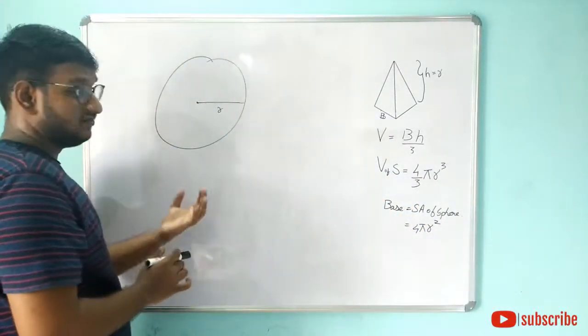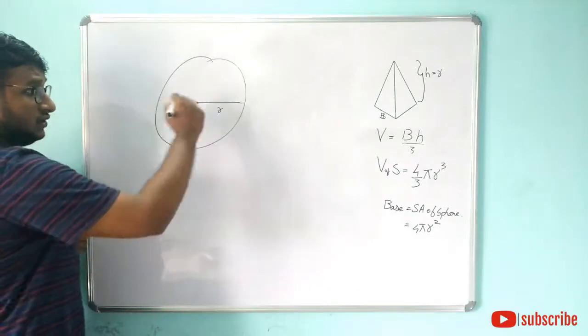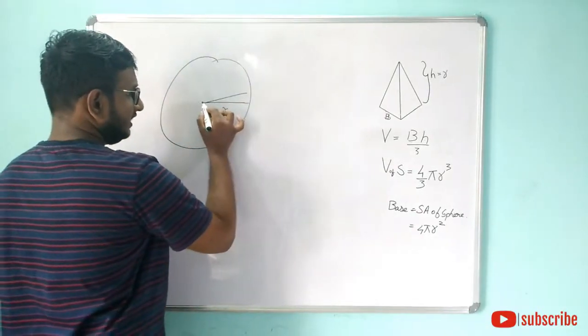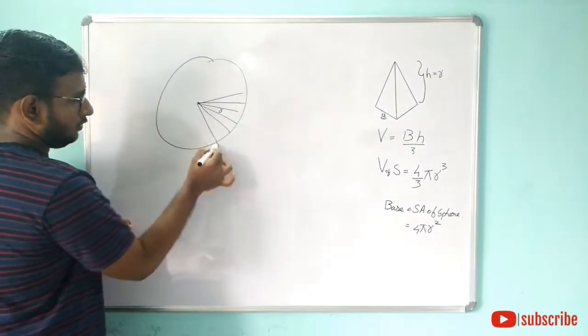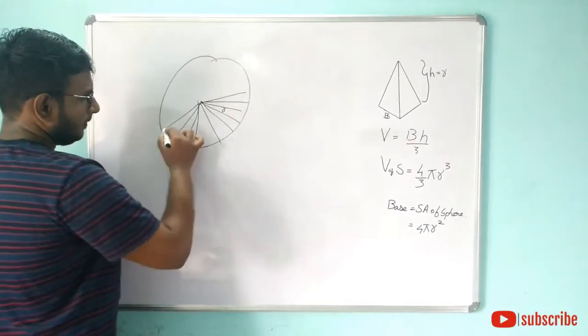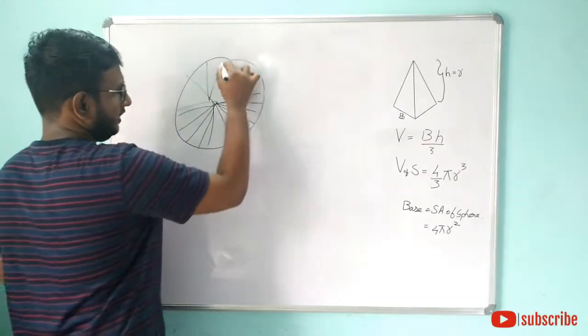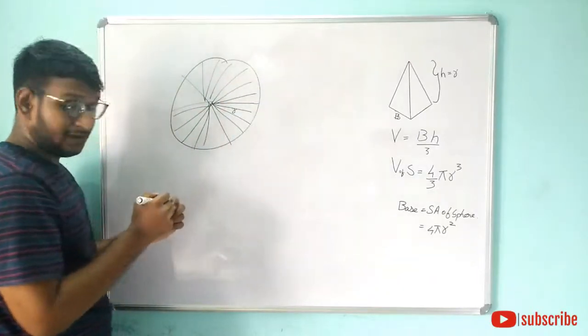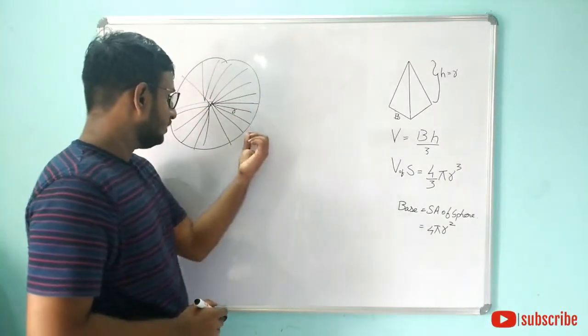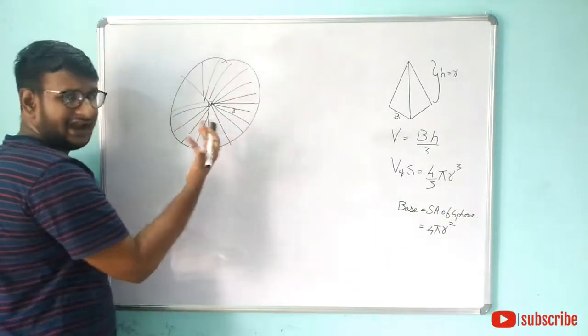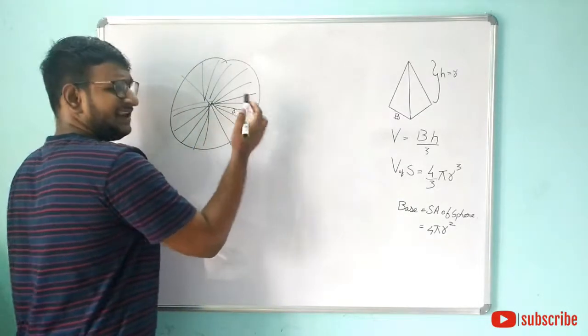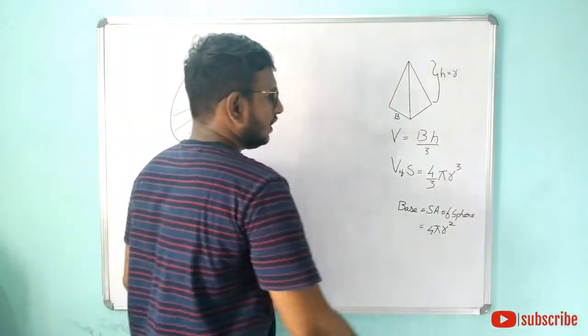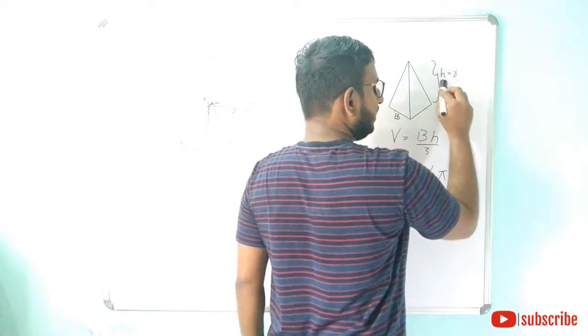In the sphere, we can use three-dimensional pyramids. We can cut the sphere into pyramids. In the pyramid, the height of the pyramid is the radius of the sphere. So the height of the pyramid will be R, h is equal to R.